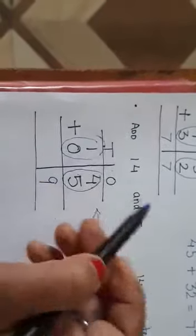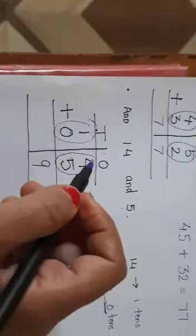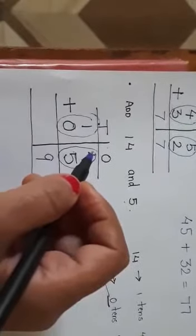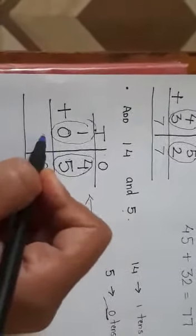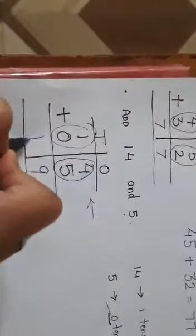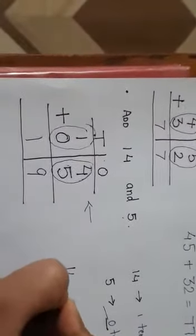And what is one plus zero? You remember the rule when we add zero to any number we get the same number. So I will get one plus zero, one. So what is my answer? Fourteen plus five is equal to nineteen.